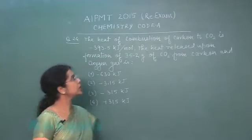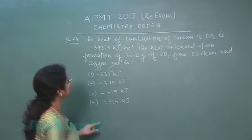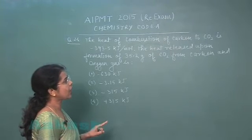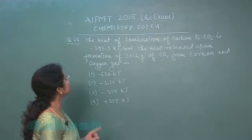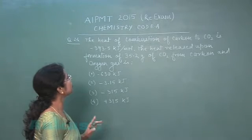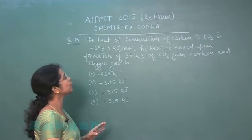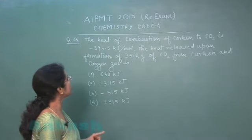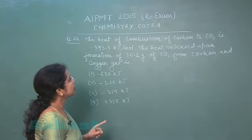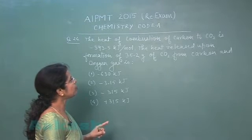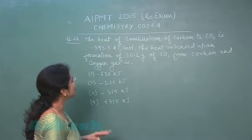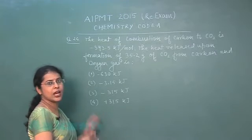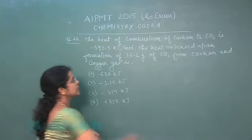Moving to the next question, question number 24. The heat of combustion of carbon to CO₂ is minus 393.5 kilojoule per mole. The heat released upon formation of 35.2 gram of CO₂ from carbon and oxygen gas is — four options are given.